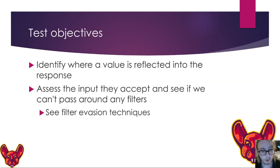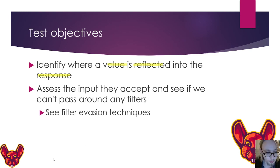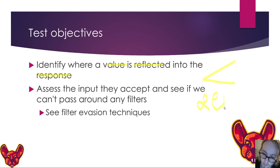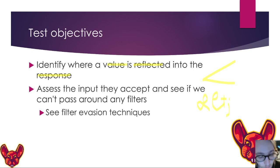As for test objectives, we really want testers to identify where a value is reflected into the response — that's really important. This means they can assess the input and see if they can pass around any filters. For example, if the filter blocks the less-than sign, they might try to get around it using ampersand-lt encoding. We have a whole chapter on bypassing those filters. We're going to identify where our value gets reflected — that's our sink into the document — and then check in that response if we can get around any filters in place.